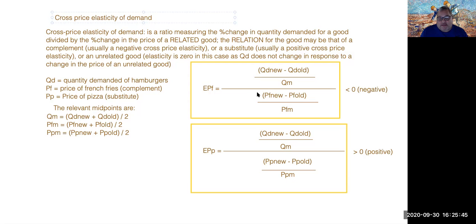The other cross price elasticity of demand that you are seeing in this slide is the cross price elasticity of demand to the price of pizza. Pizza in this case is to be considered a substitute to hamburgers.